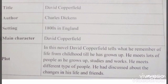I am reading the story setting for you. Title: David Copperfield. Author: Charles Dickens. Setting: 1800s in England. Main character: David Copperfield. Plot: In this novel, David Copperfield tells what he remembers of life from childhood until he has grown up. He meets lots of people as he studies and works, meeting different types of people. We have discussed the changes in his life and friends.